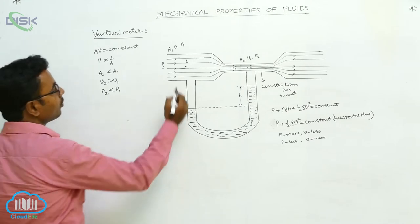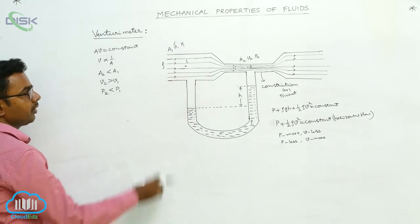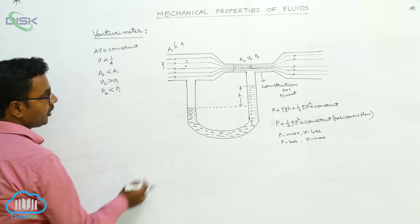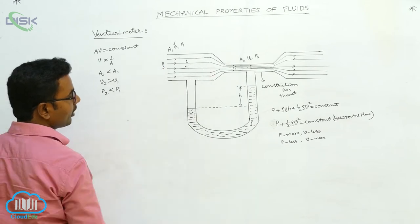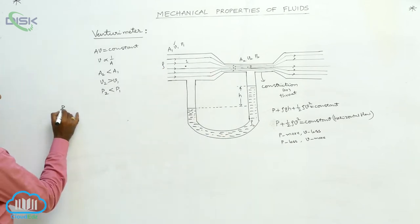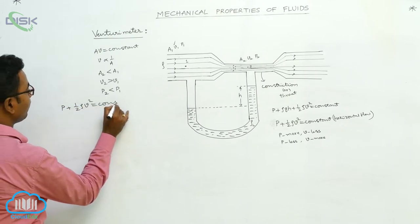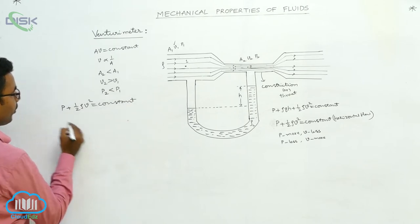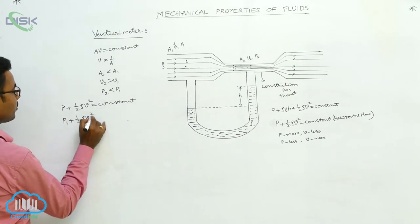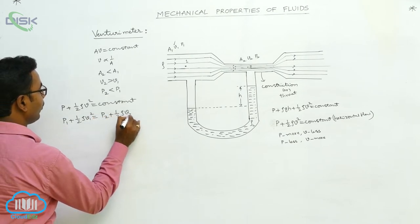We want to find the velocity of fluid flow, that is V1. Applying Bernoulli's theorem for horizontal flow: P plus one-half rho*V squared equals constant, we write P1 plus one-half rho*V1 squared equals P2 plus one-half rho*V2 squared.